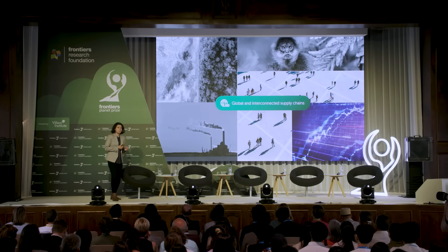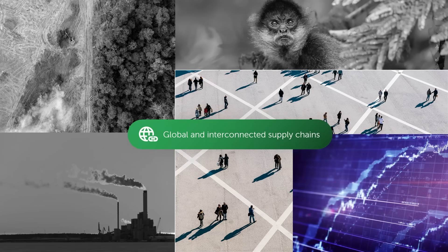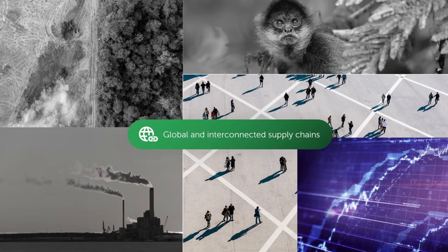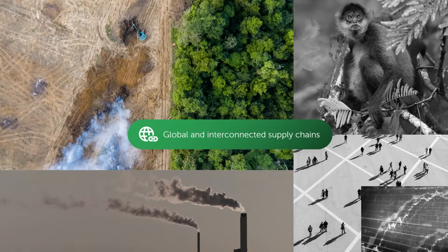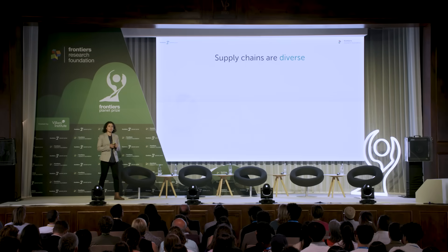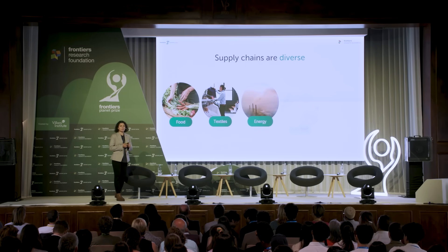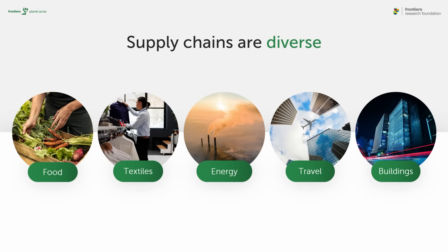These global and interconnected supply chains have a range of environmental and social impacts — from productivity to economic growth, from job creation to income creation, to environmental impacts in the form of air pollution and emissions when goods are produced for consumption, and deforestation driven by our demand for timber and food, which is pushing species to the brink of extinction.